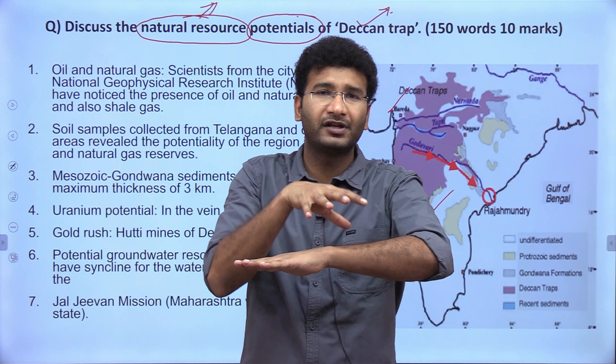In terms of natural resources, the NGRI (National Geophysical Research Institute) has said there is huge potential for oil, natural gas, and shale gas, present in the KG (Krishna-Godavari) basin as well as across the rivers Godavari, Tapi, Narmada, and Mahanadi. Gaps in the Deccan Trap are low-lying plain areas where you can find rivers or valleys.